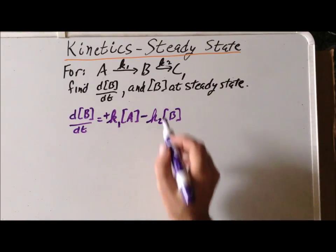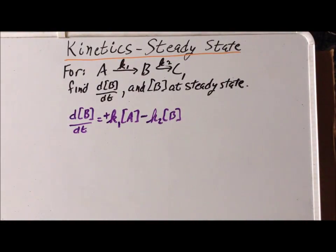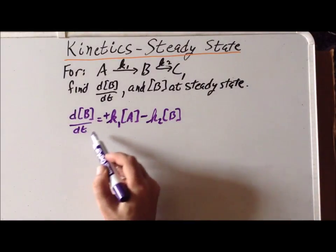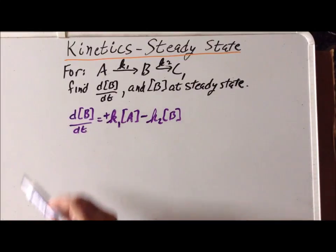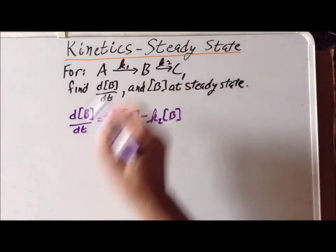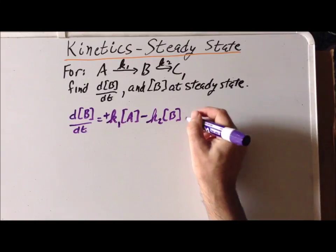Now to find the concentration of B at the steady state, we apply the steady state approximation. And that approximation tells us that the rate of change of B, this intermediate here, is defined to be zero, or assumed to be zero.